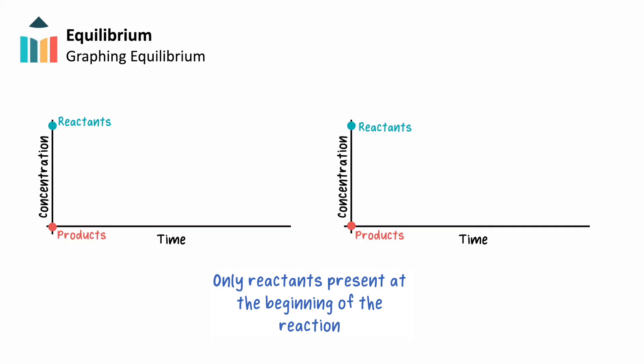As the reaction proceeds, product molecules are formed, increasing in number on our graph, while the reactant molecules are consumed, decreasing in number.